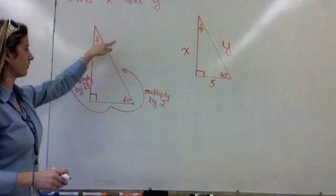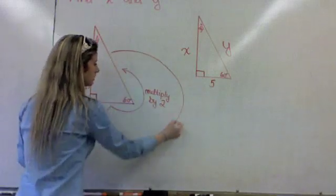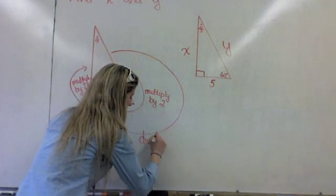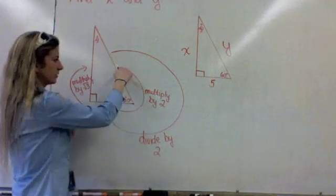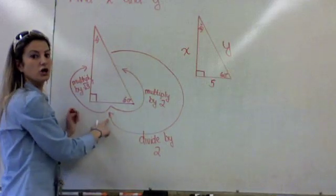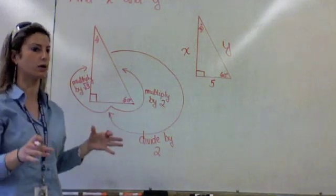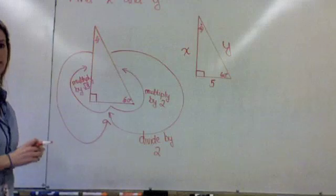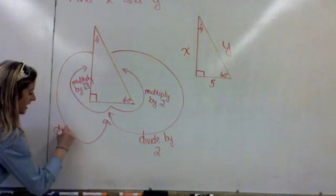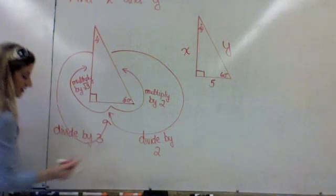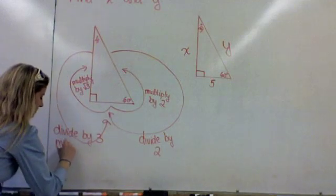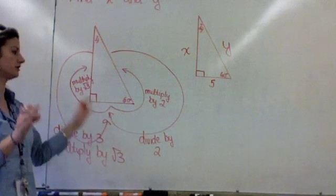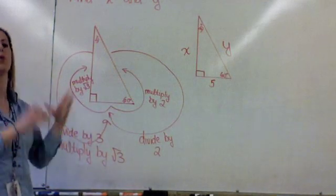Now if we're going from hypotenuse to short leg, that's easy — you just divide by 2. Because if you multiplied by 2 to get to the hypotenuse, you divide by 2 to undo it. The only one that involved a little more math was going from the long leg to the short leg. What we need to do here is divide by 3 and then multiply by root 3. We talked in class about why these tricks are valid.